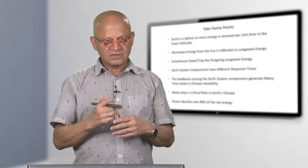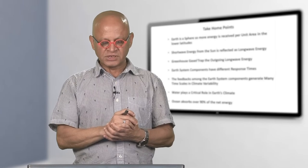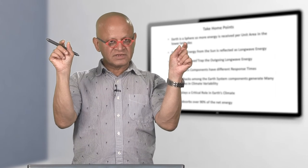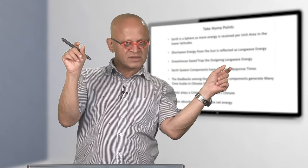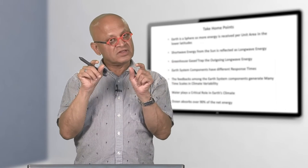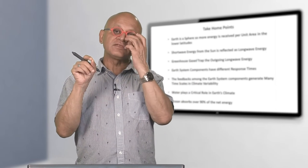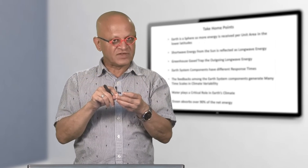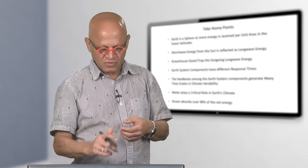Short wave energy from the sun heats everything and is reflected back to space as long wave energy. Earth is special because it has a greenhouse layer that gives us a temperature that is very balmy compared to minus 50 degrees centigrade on Mars or 460 degrees centigrade on Venus. This is at least responsible for giving us water in all three phases — liquid, vapor, and solid.